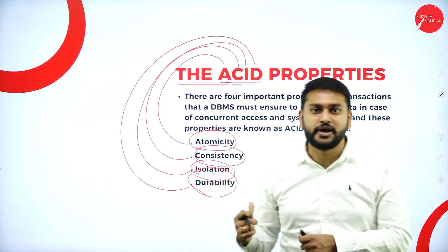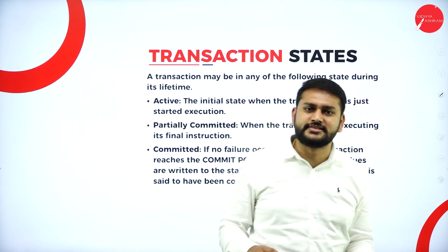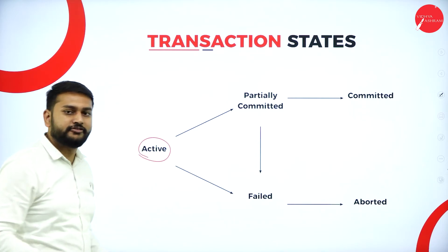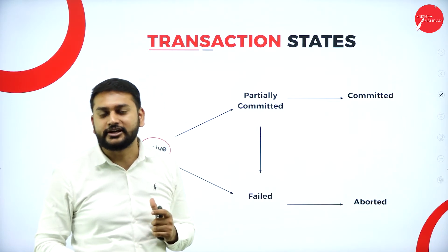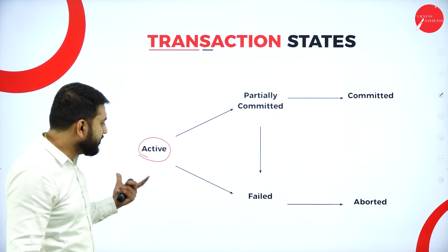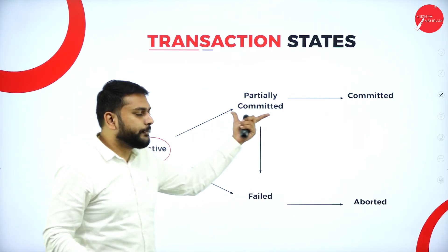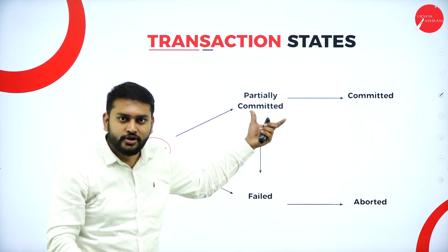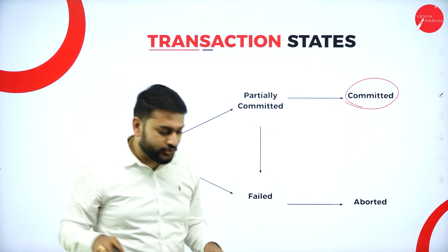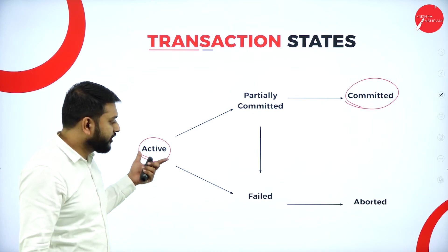All four ACID properties were discussed in Unit 2, and they are also in the Unit 4 syllabus for recap. Now the next important topic is the states of a transaction. Let me show you the diagram so you can understand clearly. The first state is the Active State — this is the initial state of any transaction once it is initiated. From there, it can go to Partially Committed or to the Failed state. In the Partially Committed state, the transaction has executed its final statement and is waiting. The next state is the Committed state — the final state where the transaction is saved and done.